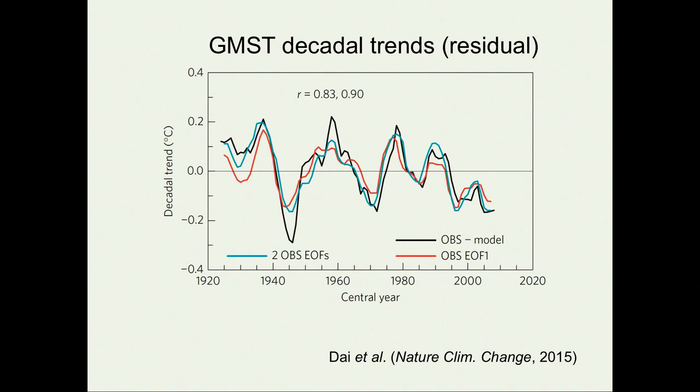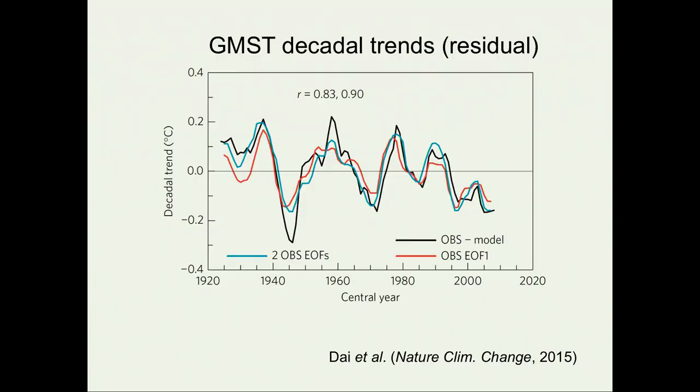More relevant to this discussion are GMST decadal trends. We take the curves and compute running decadal trends, plotted at the central year of each decade. The black curve is observations, and the swings are large — for example, in the 1930s there was 0.2 degrees of warming, presumably associated with the US Dust Bowl, and just a decade later a 0.3 degree cooling. The model retaining only two observed EOFs, shown in blue, reproduces these swings very well.